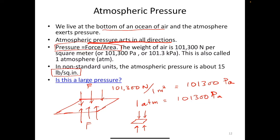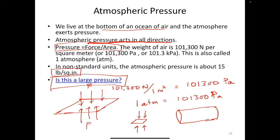Is atmospheric pressure large? To answer this, consider a demonstration video showing a train compartment that is completely airtight. This train compartment completely implodes — it spectacularly implodes. A giant metallic iron train compartment that probably weighs several hundred tons implodes.